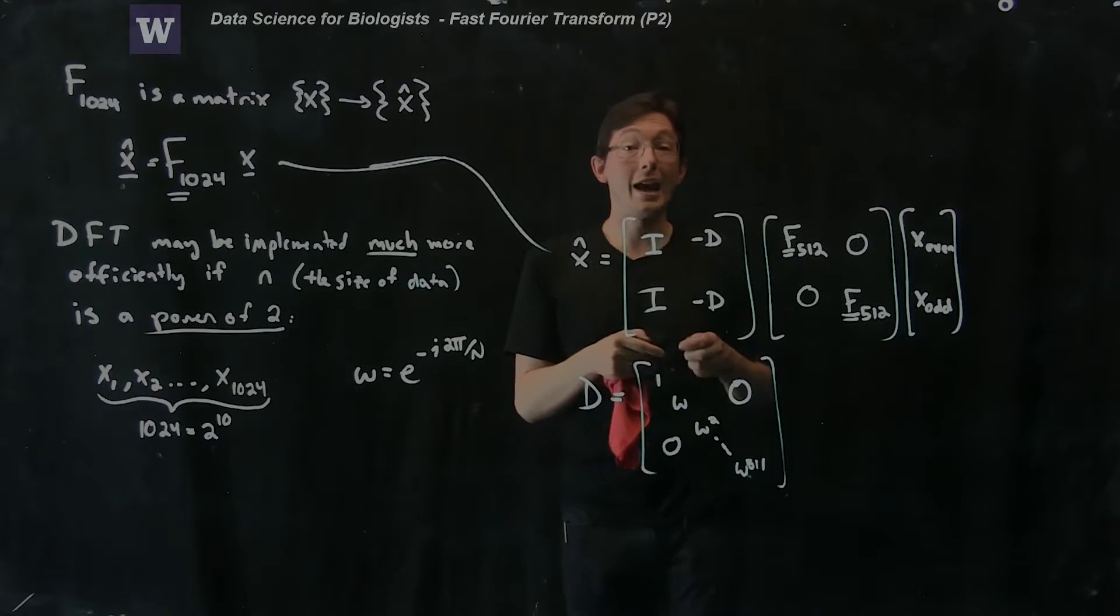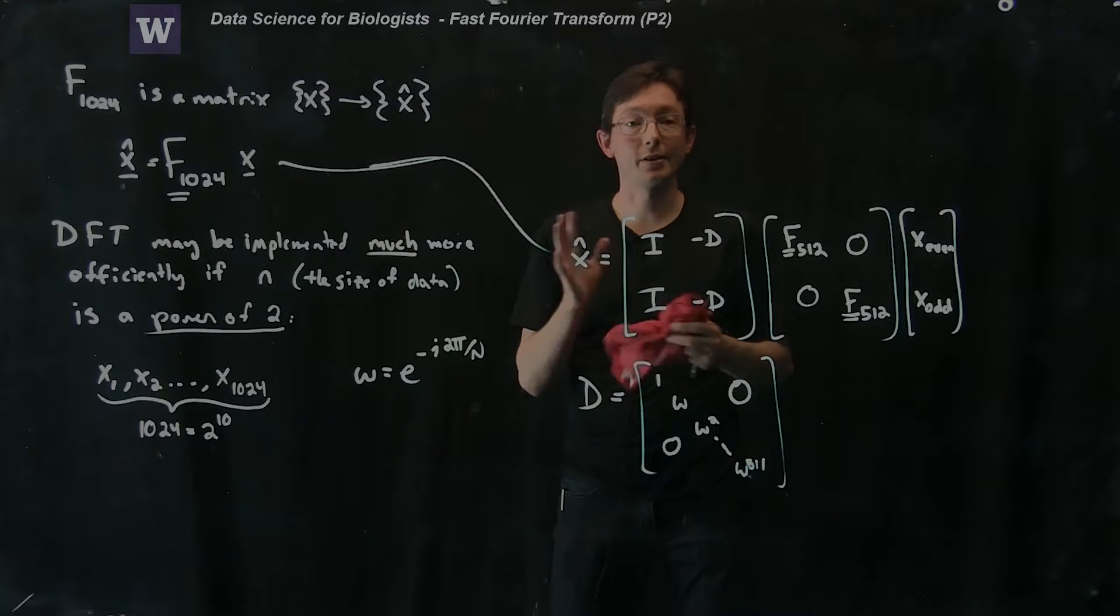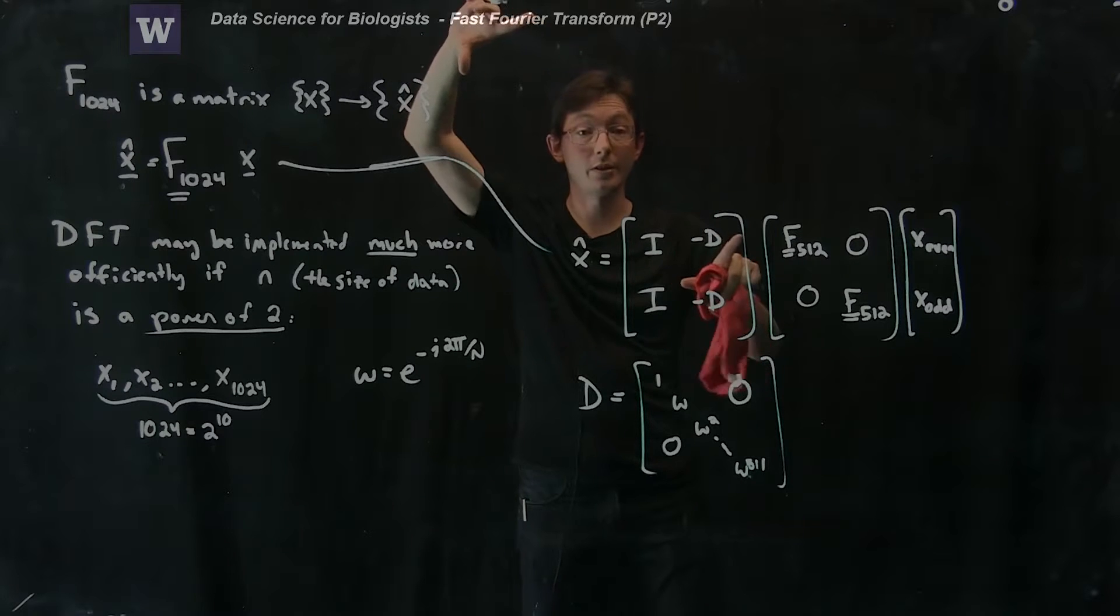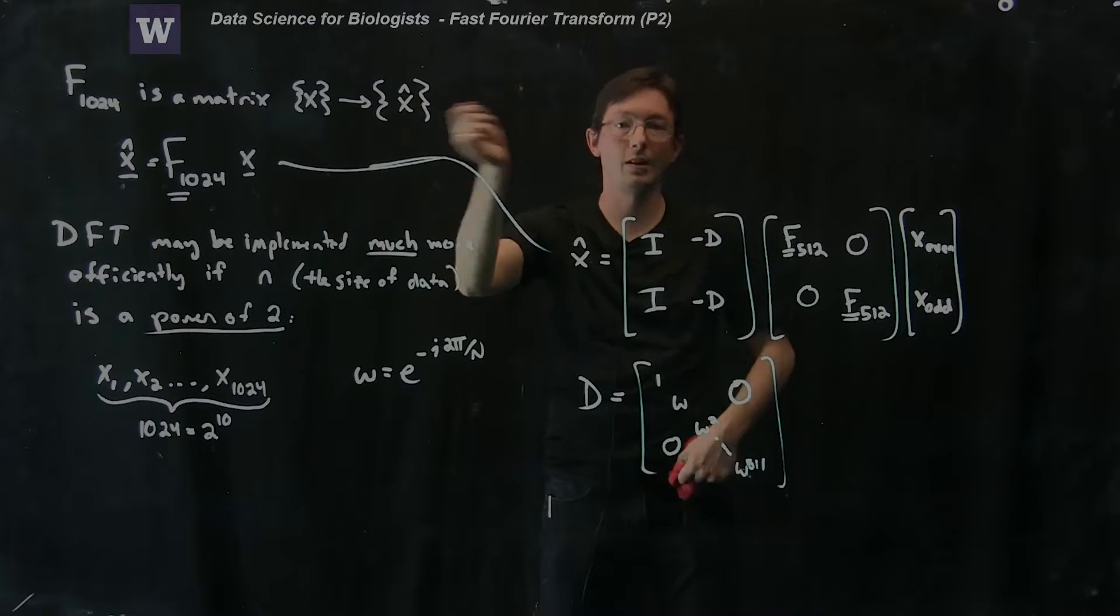Now you can actually verify this. You can write down the discrete Fourier transform matrix for F8. You can write down the big 8 by 8 discrete Fourier transform matrix by hand. It will take you some time but you can do it.